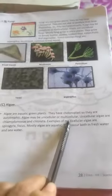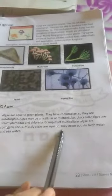They have chloroplasts. This makes them autotrophic because they can make food by themselves. Algae can be unicellular or multicellular. Unicellular types are chlamydomonas and chlorella, and multicellular types are spirogyra and fucus.